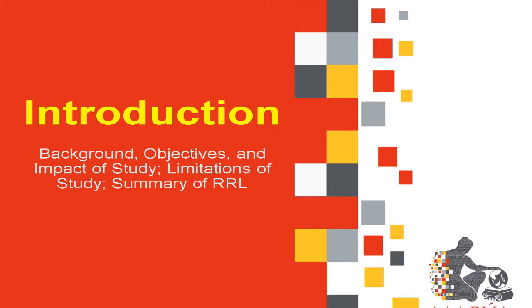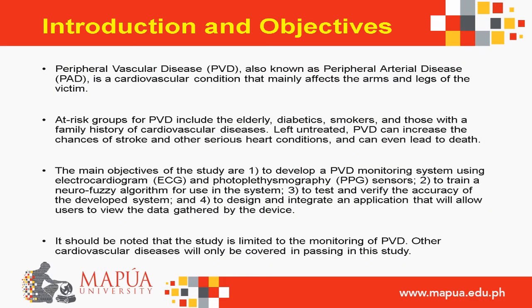For the introduction, peripheral vascular disease, or PVD, also known as peripheral arterial disease, or PAD, is a cardiovascular condition that mainly affects the arms and legs of the victim. PVD is actually more common amongst the elderly and several at-risk groups, such as diabetics, smokers, and those with a history of cardiovascular diseases.